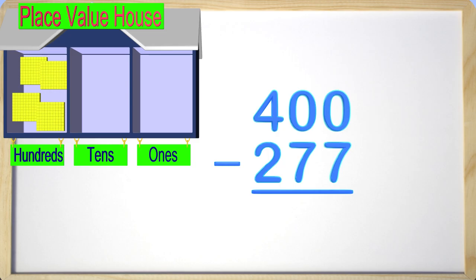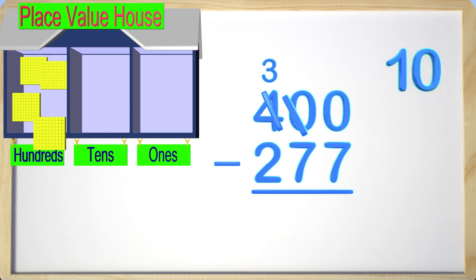Where should we borrow from next? The hundreds place! Great job! So we cross out the four and put a three there since we're borrowing one of the hundreds. Now here's the tricky part. We cannot take this hundreds straight to the ones place. We have to go down the line. So we put a ten in the tens place.